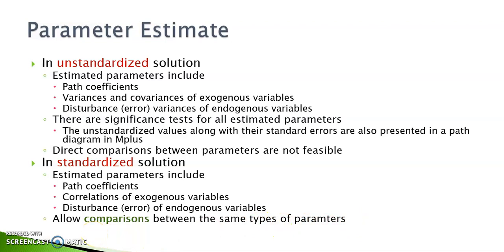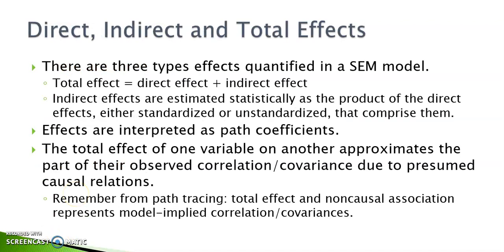For example, in causal models, we are often interested in learning which effects are stronger and what are the differences between the direct effect and indirect effect between a pair of variables. So in this video, I'm going to demonstrate how you get the values of the direct, indirect, and total effects between variables and summarize and present the information in a table.